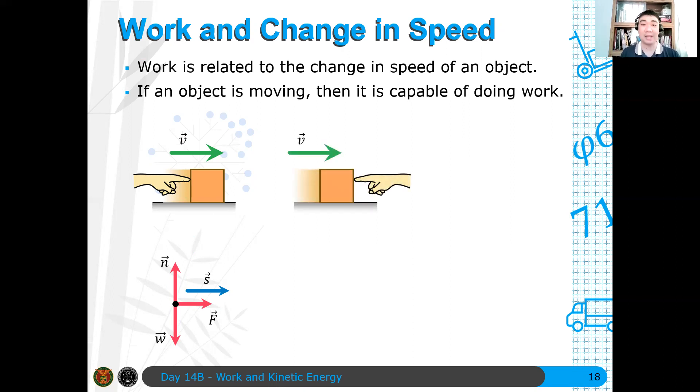Now, on the other hand, if you apply it anti-parallel to the direction of the velocity, what will happen? It will slow down. Therefore, there's still change in the speed of the object.